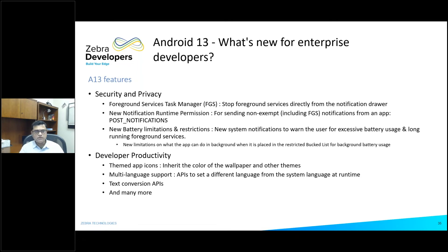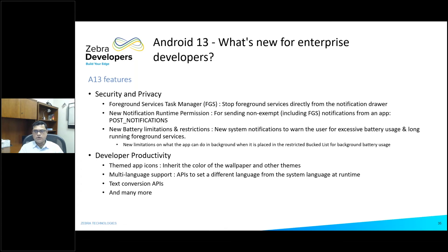We'll get into the depth of these changes in the Community Day. Just on A13 specifically: further foreground service changes from a security point of view — you can stop foreground services from the notification drawer, and new notification runtime permissions for sending non-exempt notifications. FGS is also non-exempt. Battery limitations and restrictions continue to be added, including new limitations on what an app can do in the background when placed on a restricted list, and warnings to users about excessive battery usage and long-running foreground services.